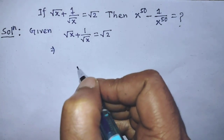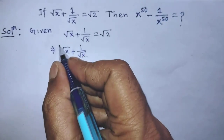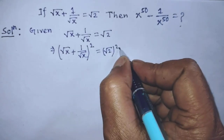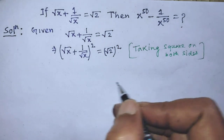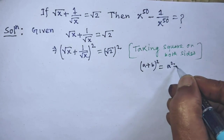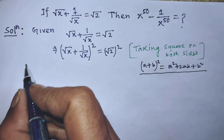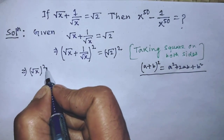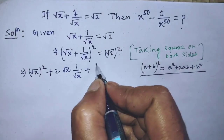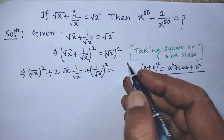If you take square on both sides of this equation, then on the left-hand side you get square root of x plus 1 over square root of x, whole to the power 2, equal to square root of 2 whole to the power 2. To simplify the left-hand side, we apply the formula: a plus b whole to the power 2 equals a square plus 2ab plus b square. So on the left-hand side we write square root of x whole squared, plus 2 times square root of x times 1 over square root of x, plus 1 over square root of x whole squared, equal to 2.